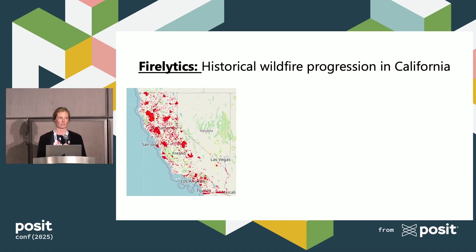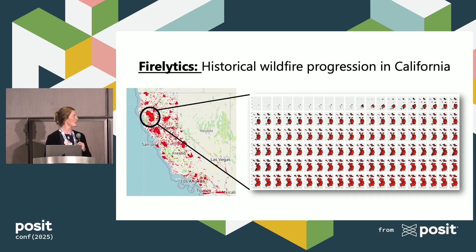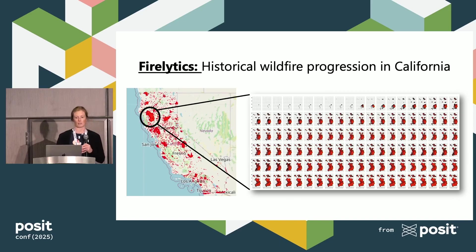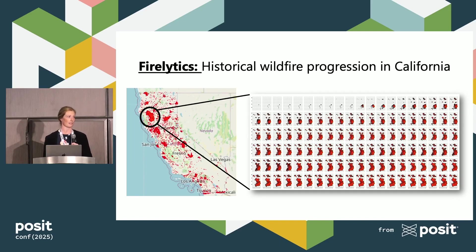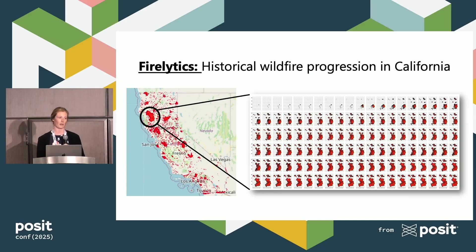I'll circle the largest fire in history, the August fire. This is the true value of Firelytics — it's a database that holds the spatial progression for every fire that's been satellite detected going back to 2012. This set of growth polygons exists for all fires on that map plus 10 more years of data. Firelytics holds over 22,000 fires and millions of polygons.